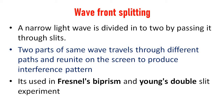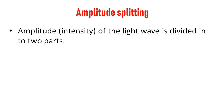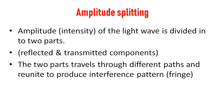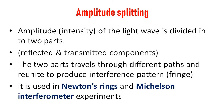The second method is amplitude splitting. Here the amplitude, or the intensity, of the light wave is divided into two parts — one is a reflected component and another is a transmitted component. The two parts travel through different paths and reunite to produce an interference or fringe pattern. This method is used in Newton's rings and Michelson interferometer experiments.